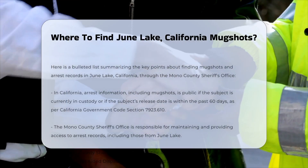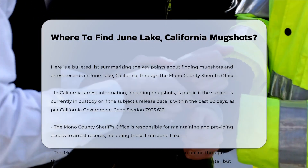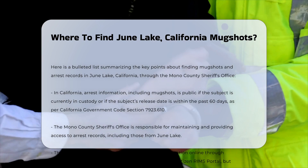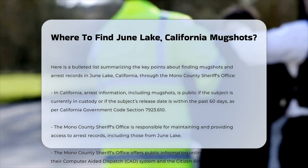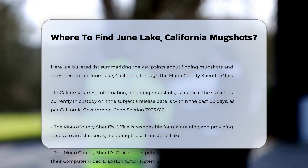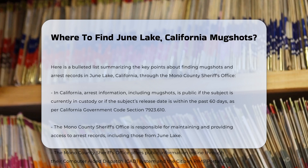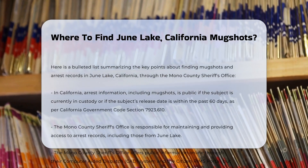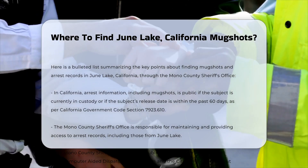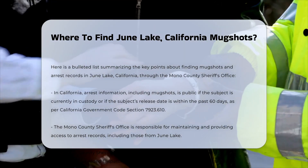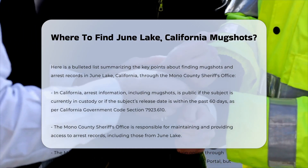To find mugshots from June Lake, California, you need to understand the policies and procedures of the local law enforcement agencies, particularly the Mono County Sheriff's Office. In California, arrest information, including mugshots, is considered public if the subject is currently in custody or if the subject's release date is within the past 60 days, as per California Government Code, Section 7923.610.